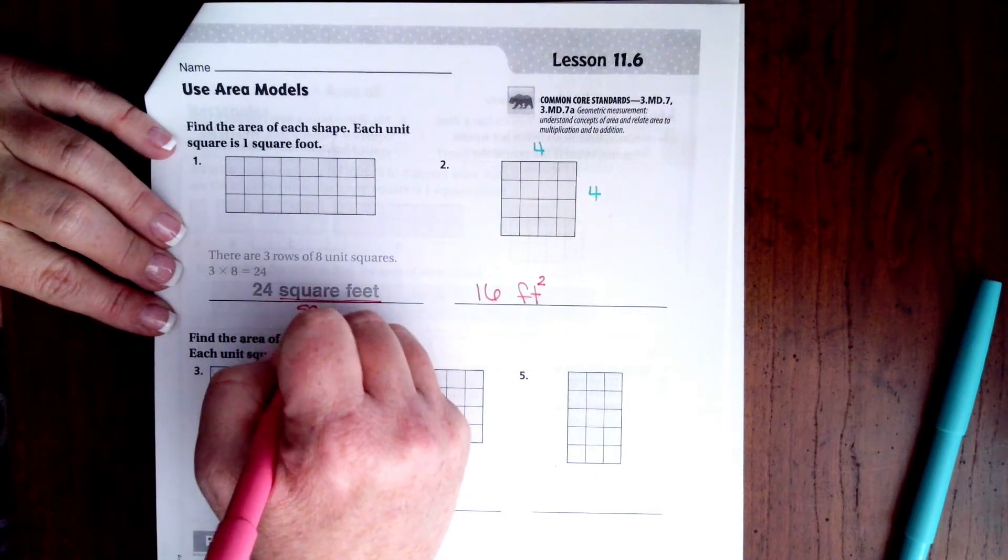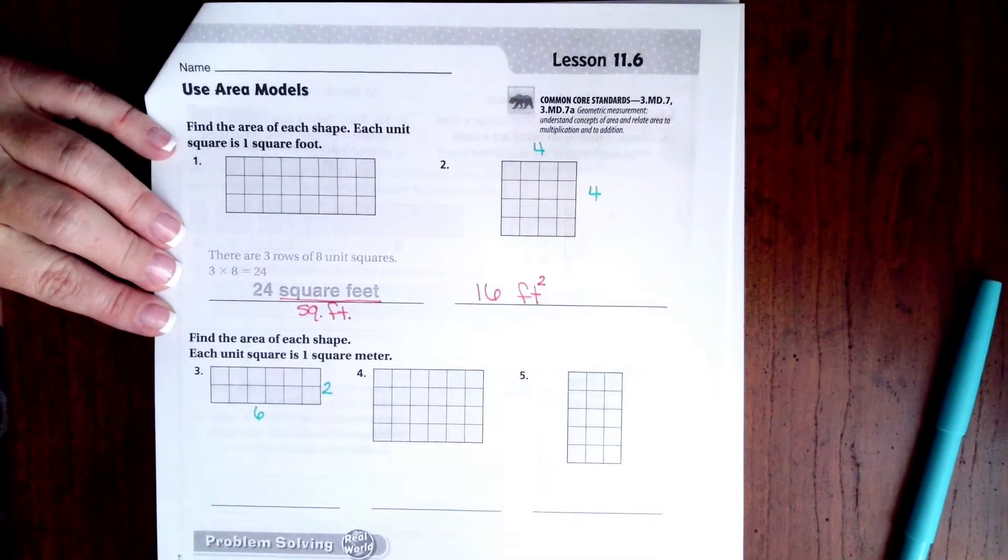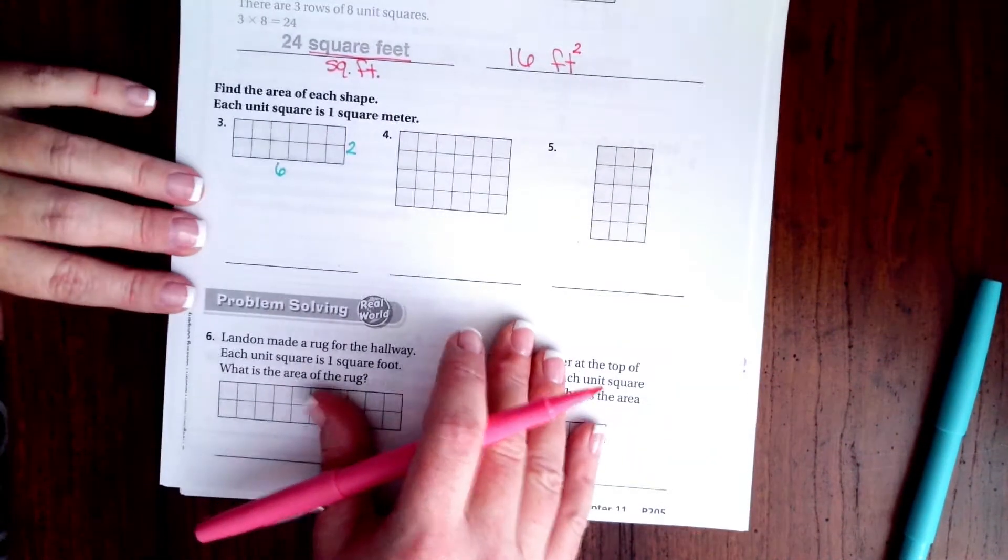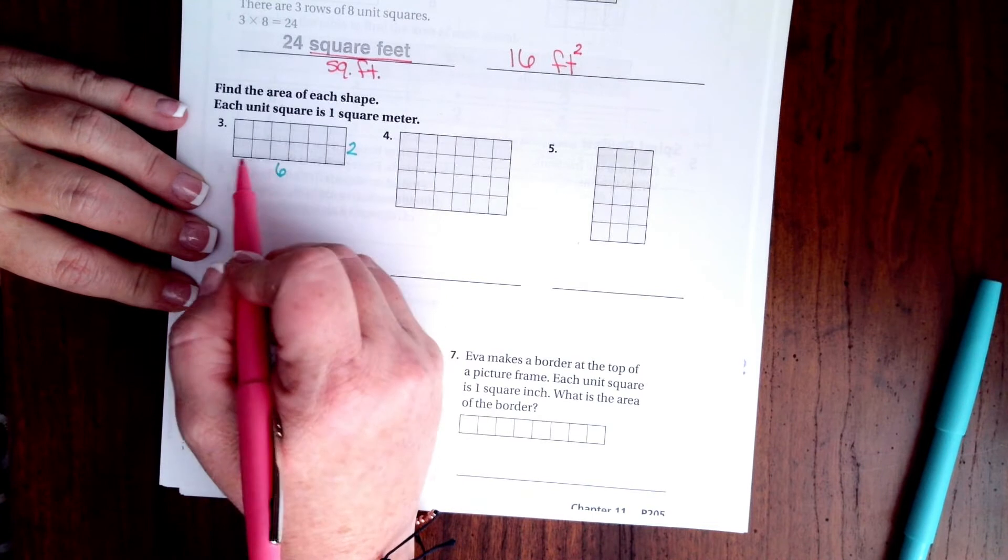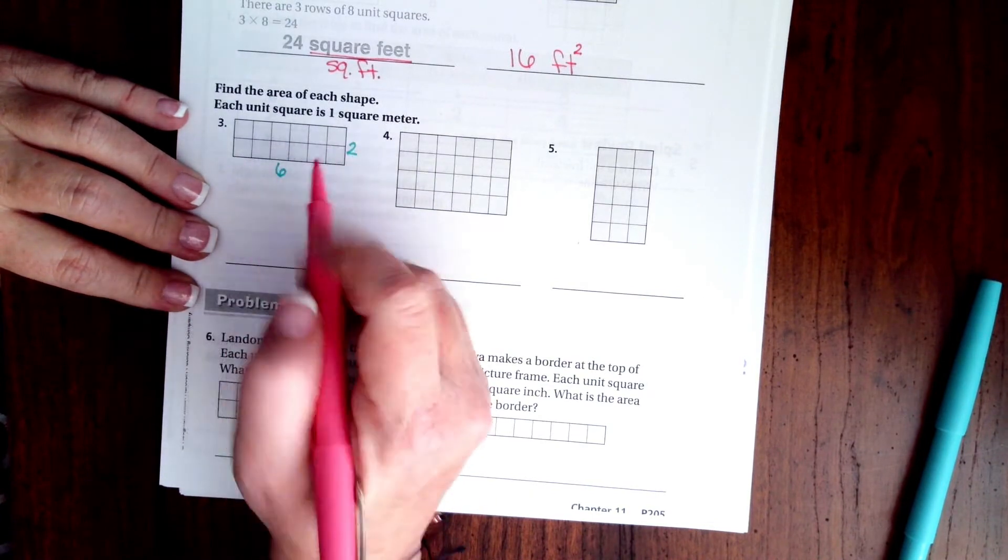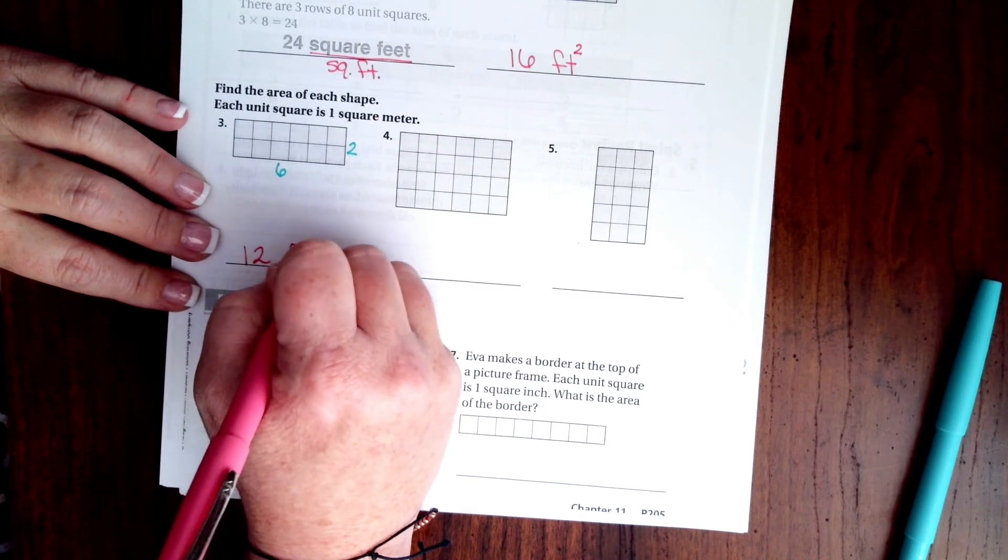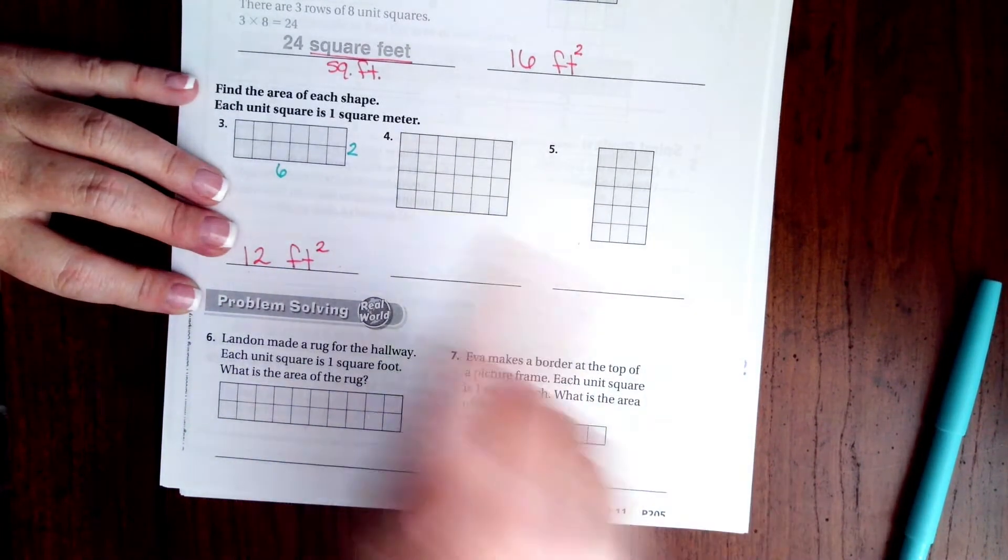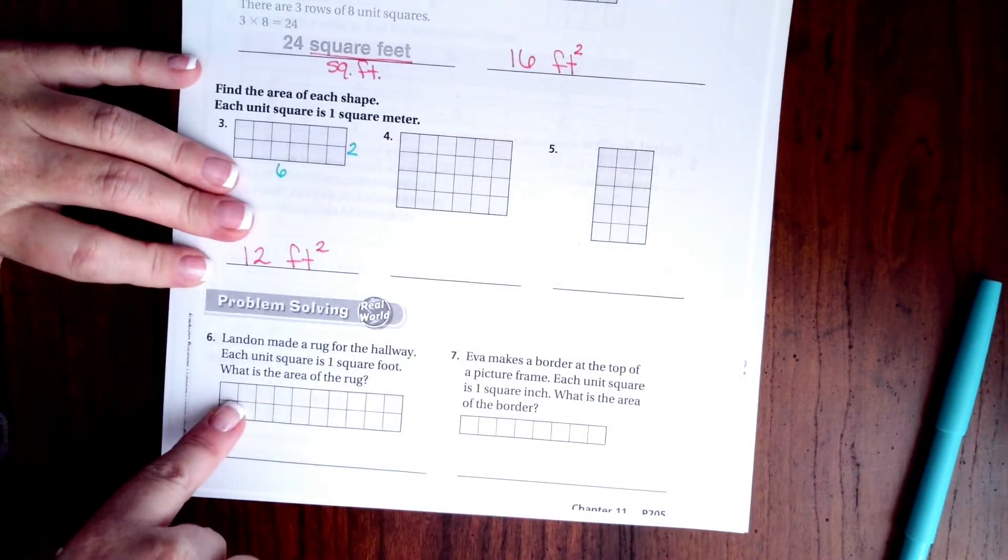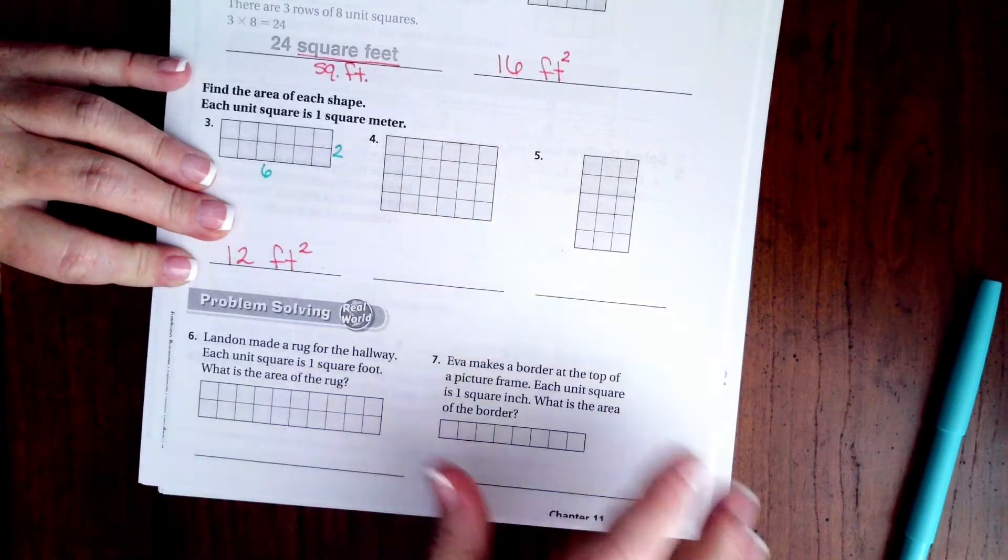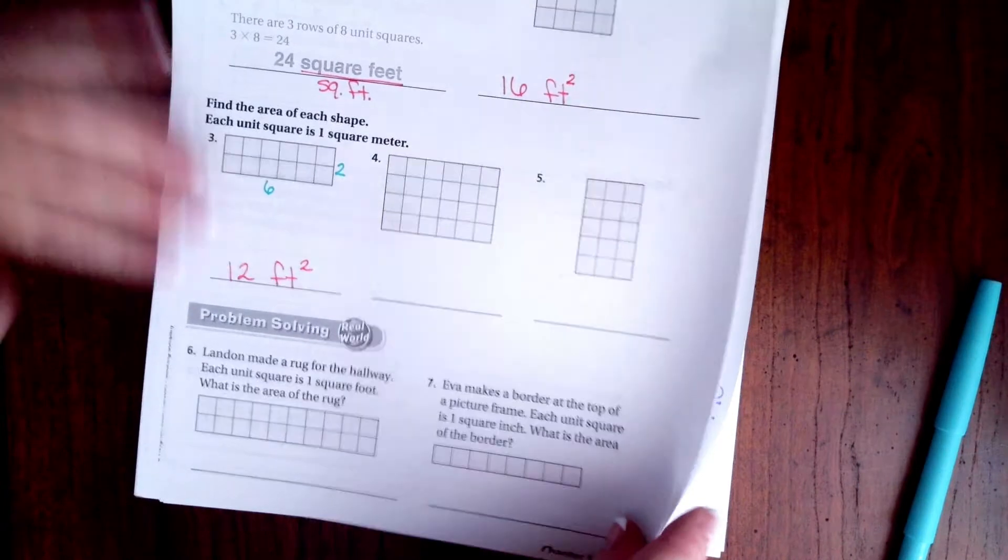You can even write square feet, so your choice, however you'd like to do that. Now six across, two up. Six times two, that is twelve feet squared. You guys get to do four and five. You are also going to do six and seven because it is the same thing.